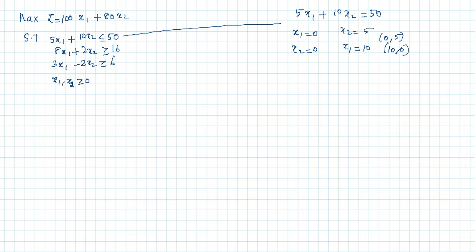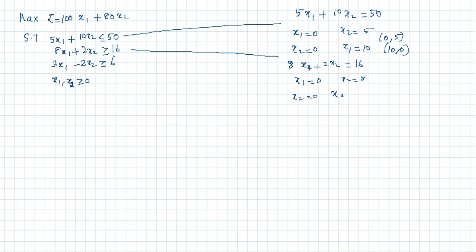For the second constraint, convert to equality: 8x1 + 2x2 = 16. On applying x1 = 0 you get x2 = 8. On applying x2 = 0 you get x1 = 2. So the two points are (0, 8) and (2, 0).